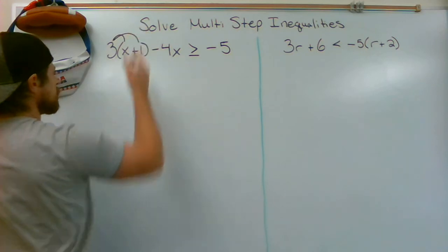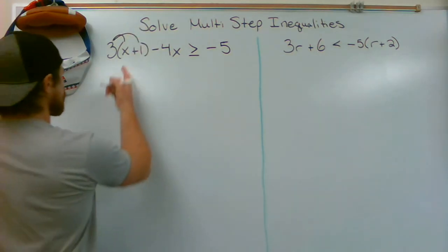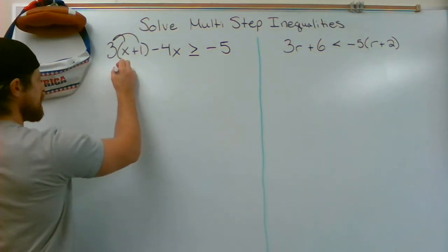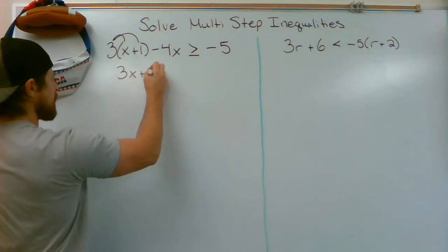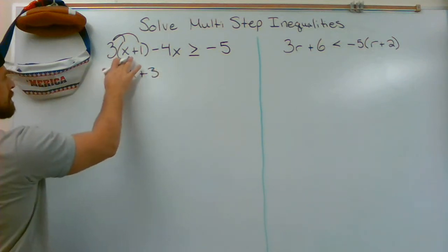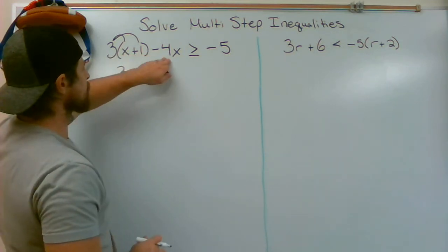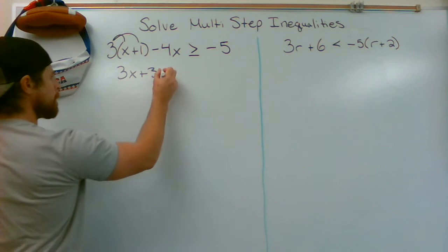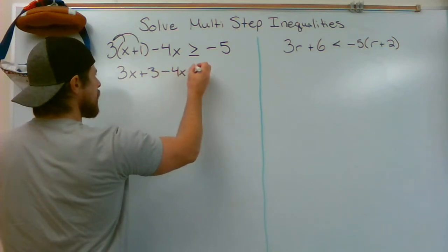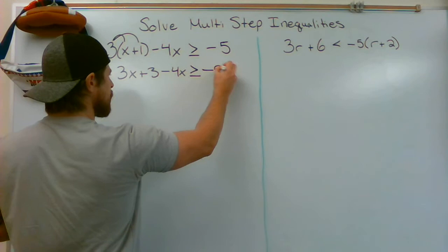So for this problem, we're going to distribute the 3 to both terms inside of the parentheses. This is going to give us 3x plus 3. So 3 times x makes 3x, 3 times 1 makes 3. Minus 4x gets brought down, and it is greater than or equal to negative 5.